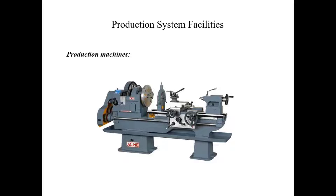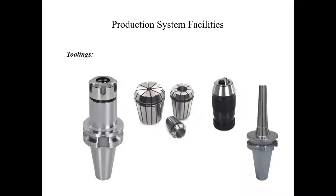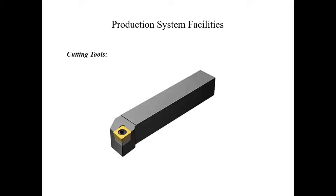Each and every production machine is included in the production system facility. Then we have the toolings — the jigs, the fixtures, and the work-holding devices — which are also part of the facilities. Also, the cutting tools used to perform machining operations and to cut materials.